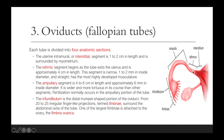The ampullary segment, or ampulla, is about 4 to 6 cm in length and approximately 6 mm in inside diameter. It is wider than the isthmic area and more tortuous in its course than the other segments. Usually, fertilization normally occurs in the ampullary segment of the tube.